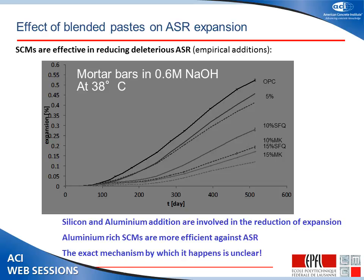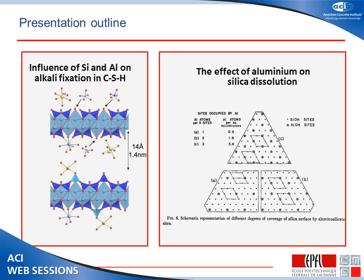This shows expansion results of mortar bars. We did a test with not quite such an aggressive alkaline content as others have looked at — only 0.6 molar at 38 degrees C. The basic idea is that this is the control portland cement. As you add in higher and higher quantities of supplementary cementitious materials, the expansion is very much delayed and reduced. With this soak solution of alkalis, eventually the alkalis will come in and overwhelm the mitigating effect of the SCM. Our hypothesis was that supplementary cementitious materials reduce the alkalinity of the pore solution.